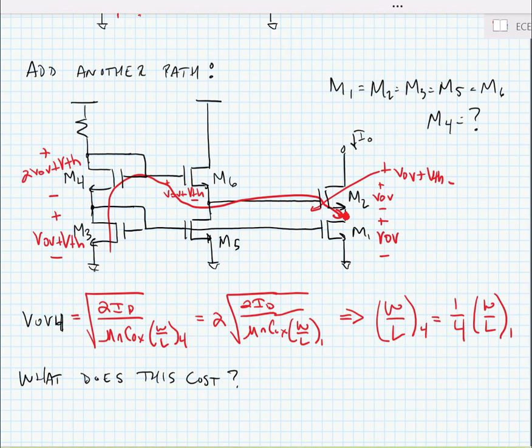So now we have a solution to reduce the voltage requirement, the minimum voltage requirement for this particular cascode current source. The question is, what does this cost us? Well, we have to add an extra branch in this particular circuit, so it's going to cost us more current. It adds a bit of complexity to the design as well.